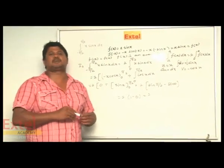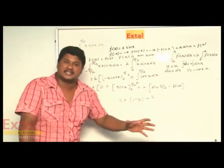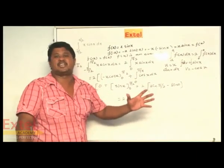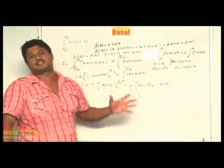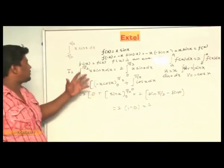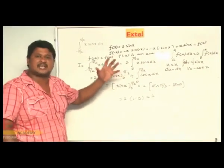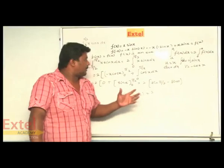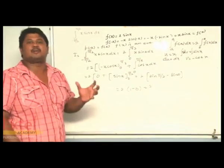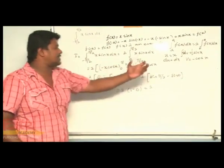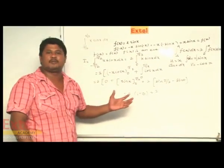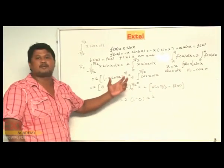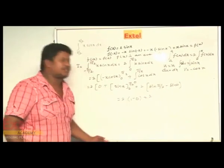So here, first we used the property of definite integrals: if f(−x) equals f(x), then the function is an even function, and by the property, the integral from minus a to a equals 2 times the integral from 0 to a. Since x sin x is an even function, we applied this to get 2 times the integral from 0 to π/2. Using integration by parts with u equal to x and dv equal to sin x, the formula gives uv minus integral v du. With v equal to minus cos x, applying limits π/2 and 0, the first term vanishes. Then the integration of cos x gives sin x from 0 to π/2, giving 1 minus 0, so the answer is 2.